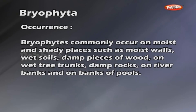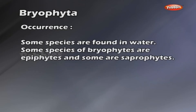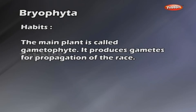Bryophytes commonly occur in moist and shady places such as moist walls, wet soils, damp pieces of wood, on wet tree trunks, damp rocks, on river banks and on banks of pools. Some species are found in water. Some species of Bryophytes are epiphytes and some are saprophytes.